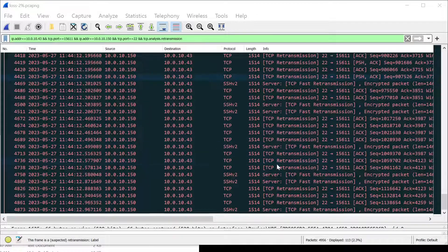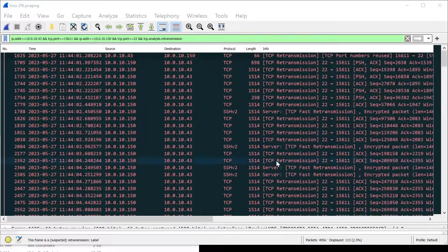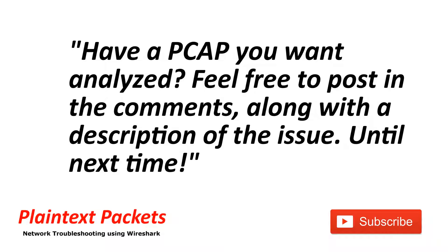Hopefully this video has shown you some quick ways of identifying where packet loss exists within a capture. In future videos we'll get into more advanced topics — like now that you've detected packet loss, how do you actually find where it is and what's causing it? That's it for this video. I hope you found it useful — please like and subscribe. If you have an issue you're working on and would like to review the capture on the channel or get some advice, feel free to post a link below with a description and I'll get back to you as soon as I can.